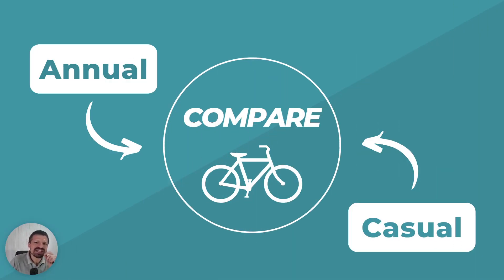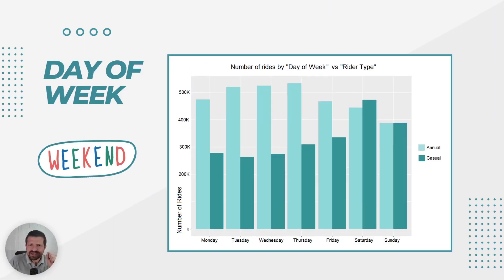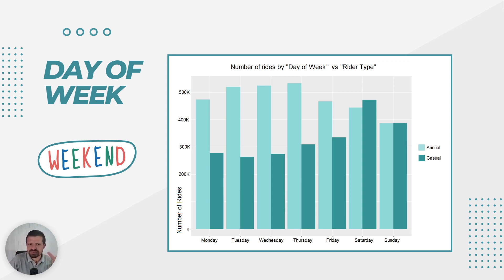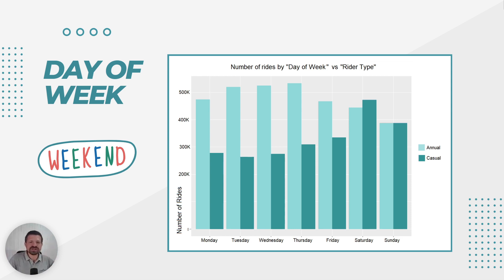Let's now take a closer look at the data through some graphical analysis to understand the differences in usage patterns in the year 2022. By looking at the number of rides by day of the week, we can see that annual members have a consistent pattern of bike usage throughout the week, with a slight dip on the weekends. On the other hand, casual riders tend to increase their usage during the weekends.